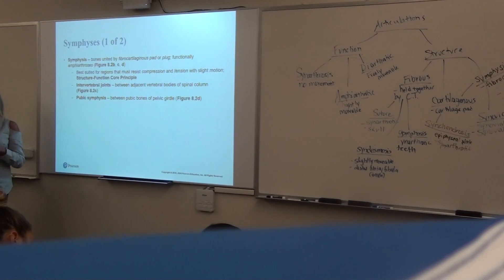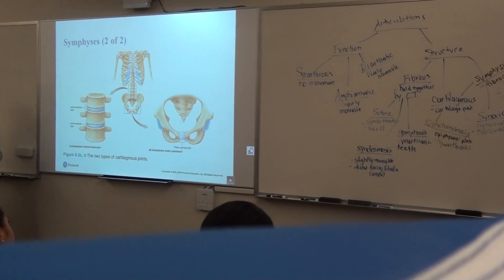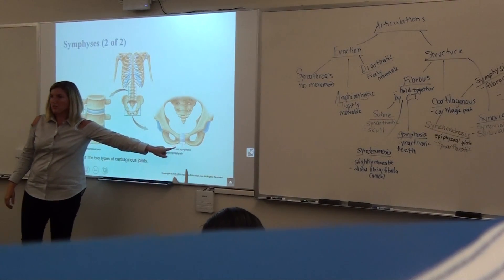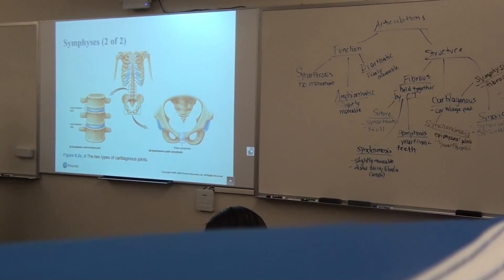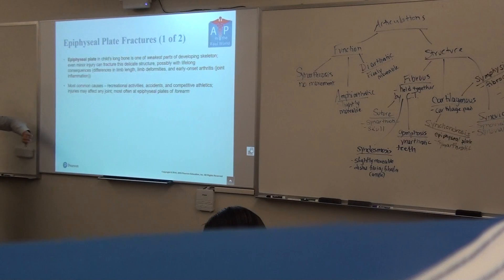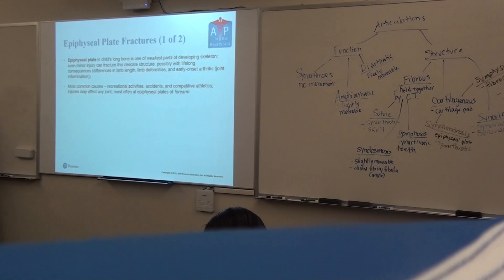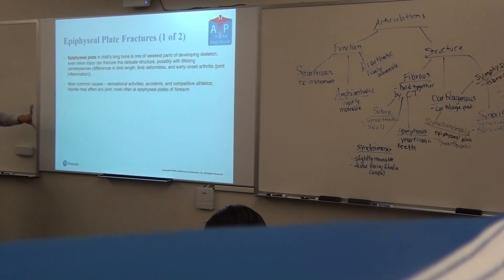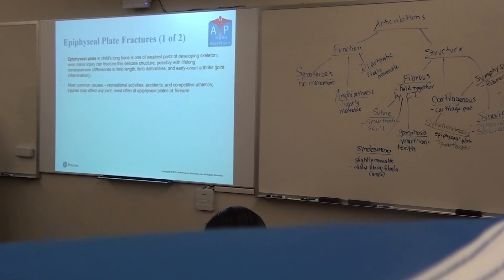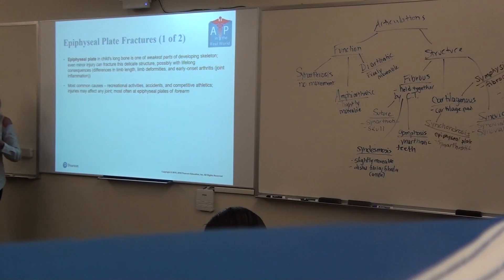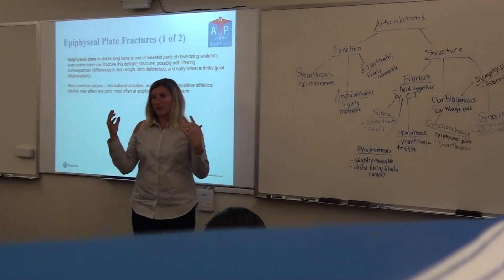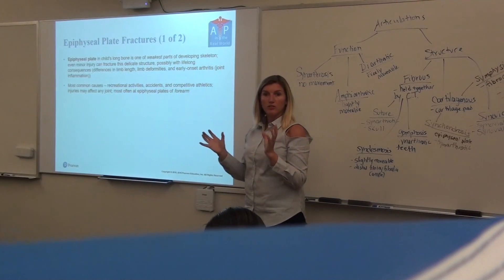Next week in lab we'll do lower extremities and you'll get to see the hip bones and look at the pubic symphysis — there's a big piece of cartilage right in the front of the pubic bones. There are also fractures that can occur at the epiphyseal plate. This is where the growth plate actually breaks instead of breaking on the diaphysis. An epiphyseal plate fracture could affect the overall growth and lengthening of the bone — usually from some type of accident like gymnastics or a playground, and it could affect the growth of that limb.